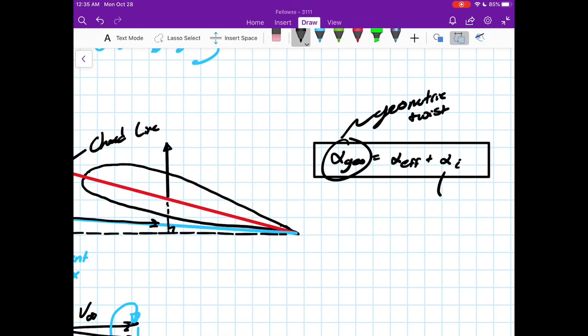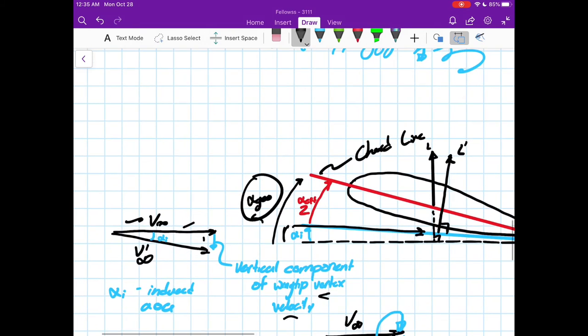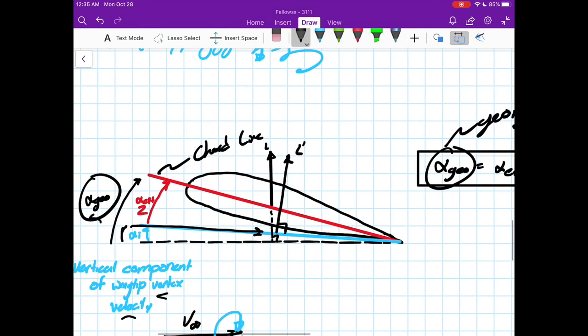Now we've tilted our free stream, so now our new lift vector is pointed slightly off. This is our new lift vector. I'm not going to call it L prime because that's lift per unit span, but my notes say L prime so I'll stick with it. We have our original L and our new L. We know that the actual free stream is still moving in this direction - we just have this new effective free stream from the point of view of the wing.